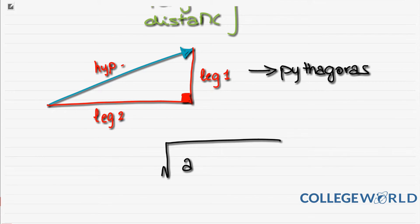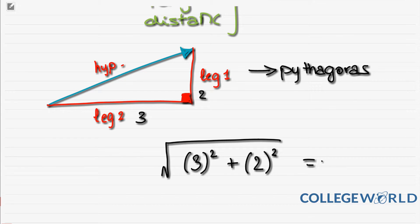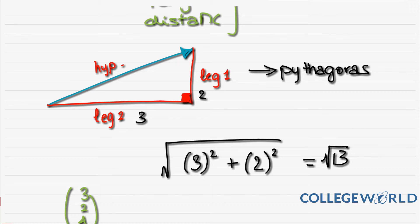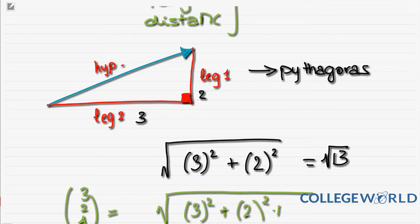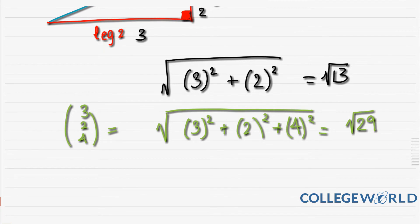Using Pythagoras, you find the square root of the sum of the squared components. For example, if the vector is (3, 2), you calculate √(3² + 2²) = √(9 + 4) = √13. For a 3D vector such as (3, 2, 4), you do the same: √(3² + 2² + 4²) = √(9 + 4 + 16) = √29. That gives the modulus of the 3D vector.